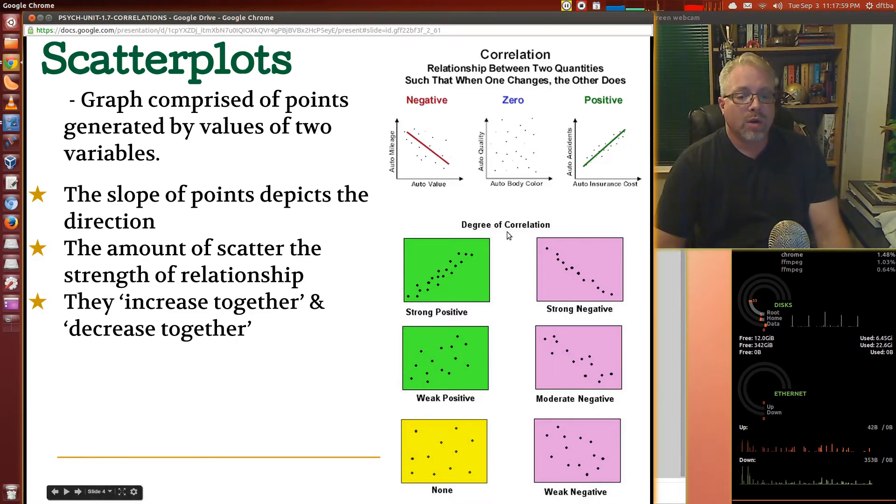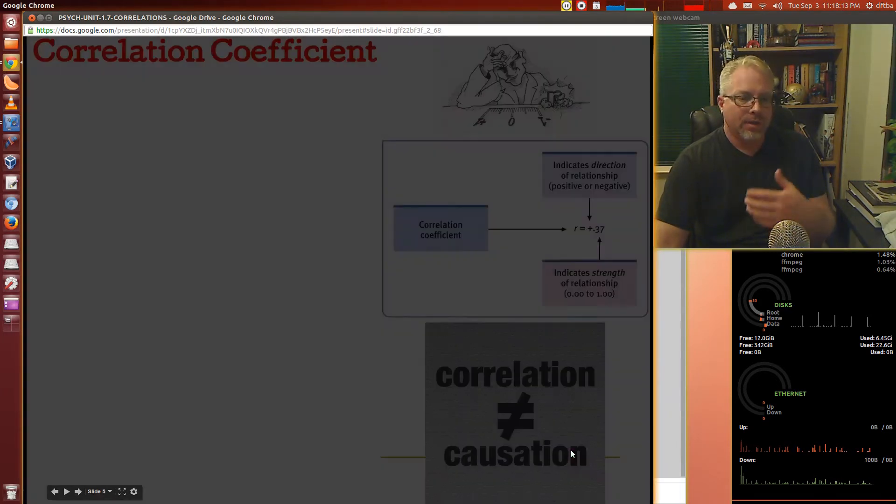The degree of correlation. You've got strong positive here, strong negative. It's how they're grouped. So the middle ones here, this is weak, this is negative. This is none, the yellow one. And this is kind of weak negative. Hopefully you'll get a feel for this.